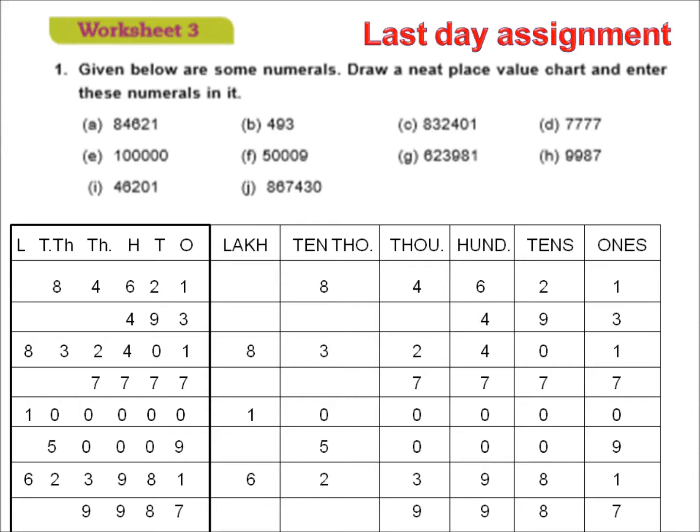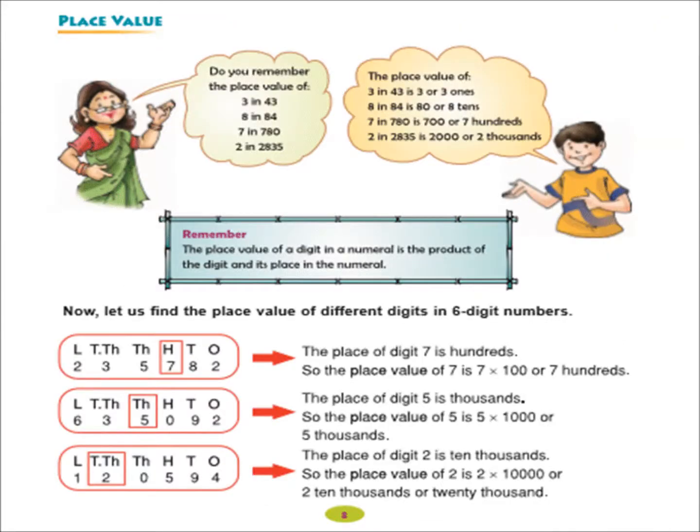I think all of you have solved it. If there is any query, then send to me. Your next topic is place value. As you know, the place value of a digit in a numeral is the product of the digit and its place in the numeral. You can understand it with the help of following examples which is given here.